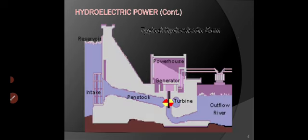This is a schematic and very simple diagram providing basic information about hydroelectric power. It consists of a penstock and a powerhouse, and the mechanical component is the turbine.